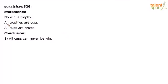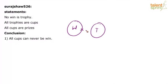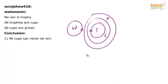Next question. No win is trophy. All trophies are cups. All cups are prizes. The only conclusion is: all cups can never be win. Draw the basic diagram. No win is trophy — win and trophy cannot overlap. All trophies are cups — trophies go inside cups. All cups are prizes — cups go inside prizes. This is the basic diagram for the given statements.